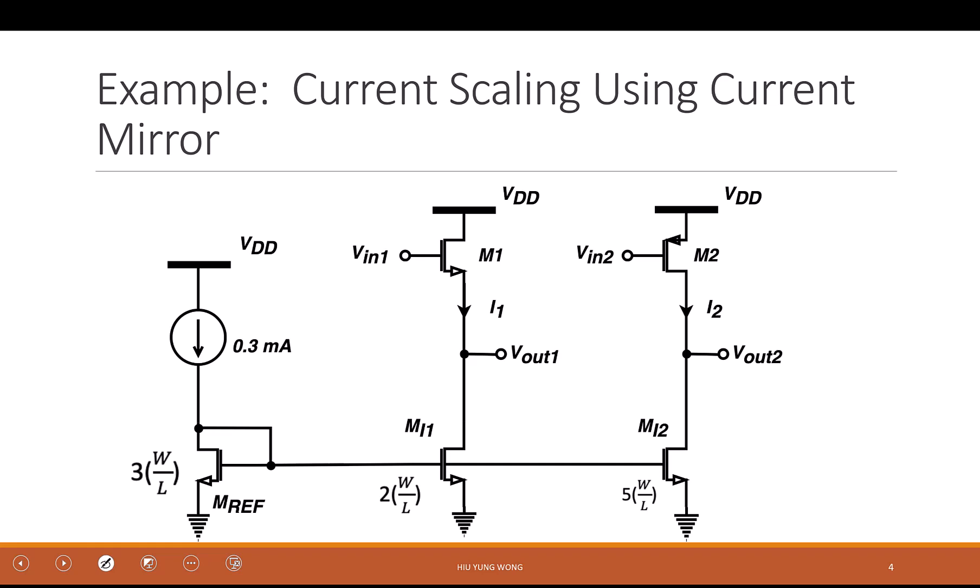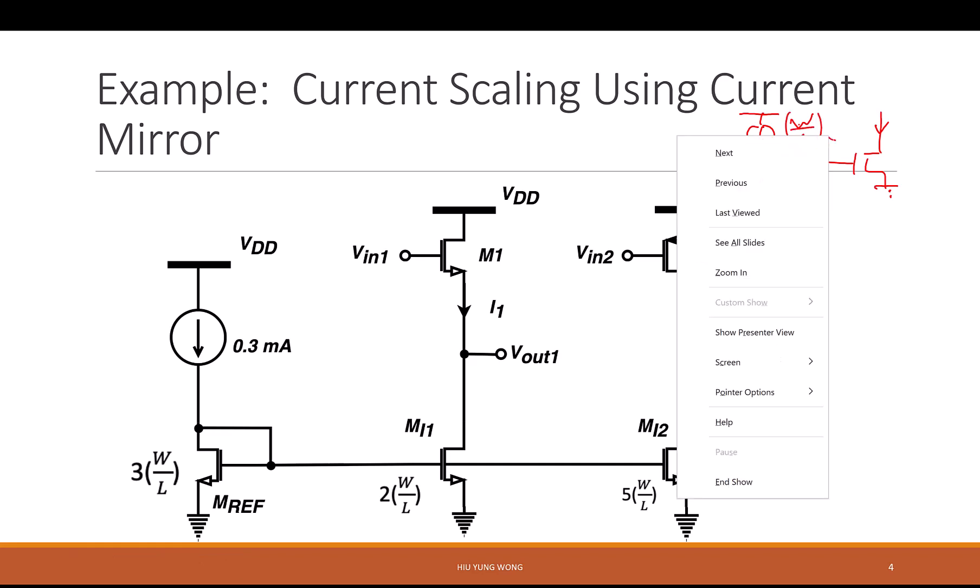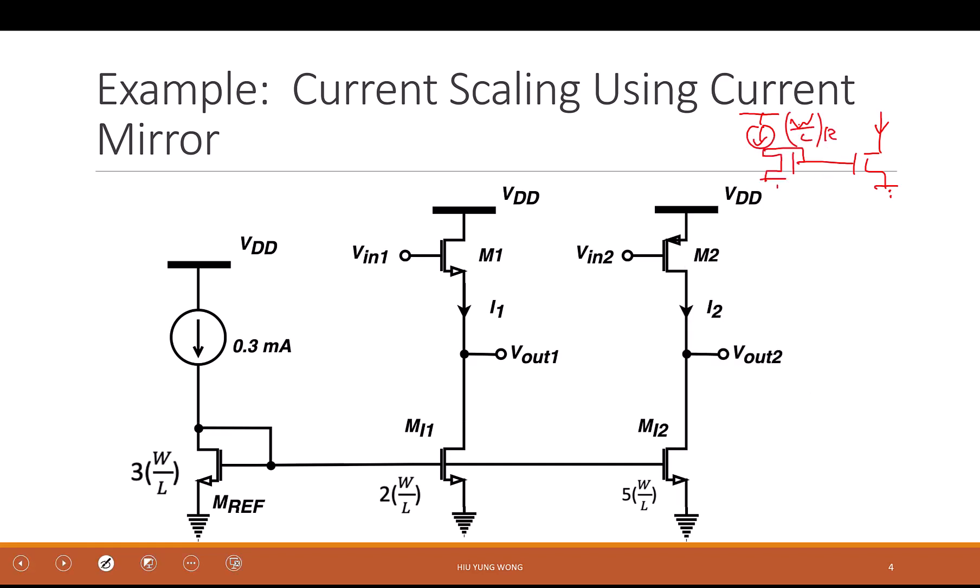And why is that? Then let me draw this circuit one more time, because it was from last time. We say that maybe our current mirror can be something like this. So this is W on L, I call it ref, and this is W on L, I call it one, right? And I say, this is I one, so you just told me what is the relationship? And this is, I call it I zero.